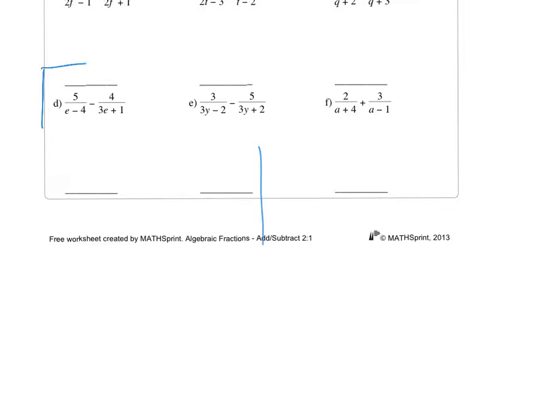Okay. So we're going to, I'll do this one here. So the common denominator, I'm just going to call it, it'll be e minus 4 and 3e plus 1 because I would times them together to find something they both go into. So then if I've done that, what have I done to this one here? Yeah, I have times it by that, haven't I?